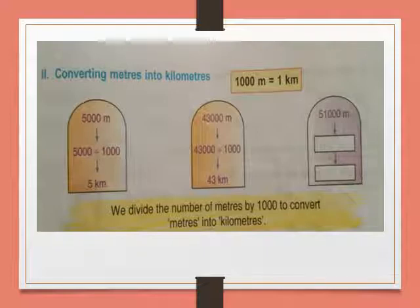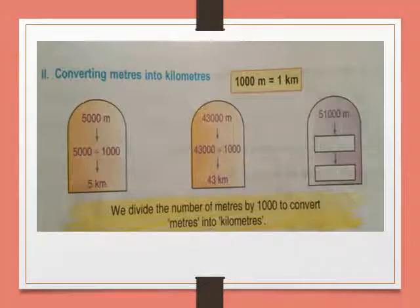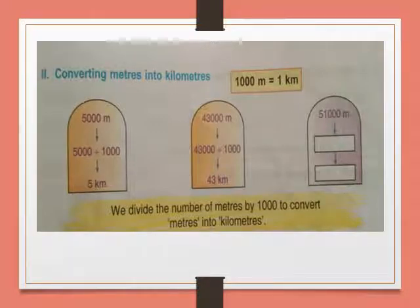5,000 metres — we divide it by 1,000, so 5,000 divided by 1,000 equals 5 kilometres. Here, 43,000 metres is given and we have to convert it into kilometres, so divide it by 1,000 again — we get 43 kilometres. Here, 51,000 metres divided by 1,000 gives us 51 kilometres. Thus, we divide the number of metres by 1,000 to convert metres into kilometres.